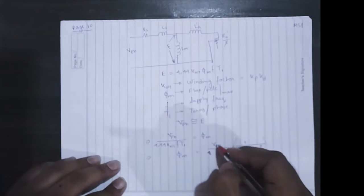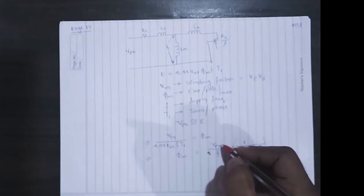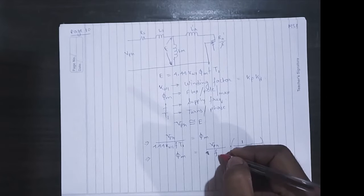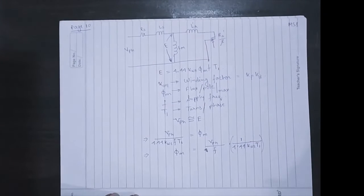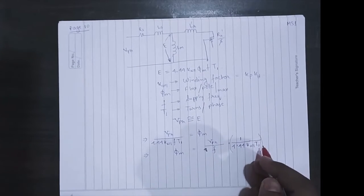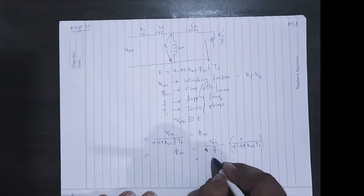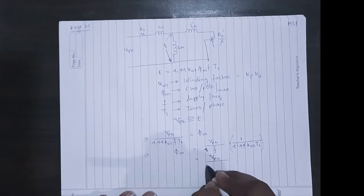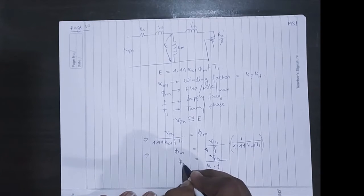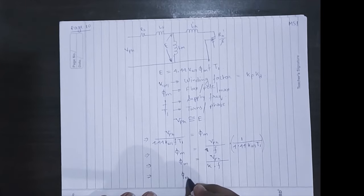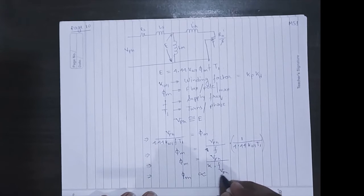Now this portion that is done in red bracket is actually constant except V_phase by f. So we can write it as V_phase by constant times f. From here we can notice that phi_m is equal to V_phase by f.